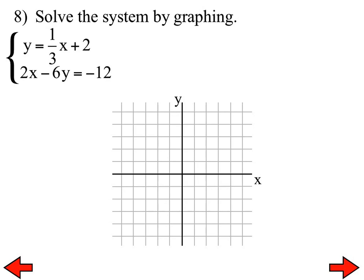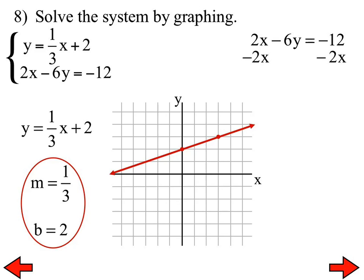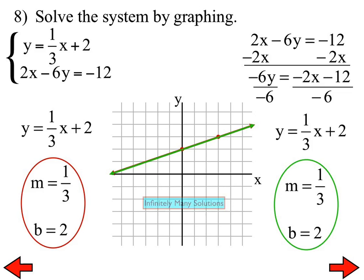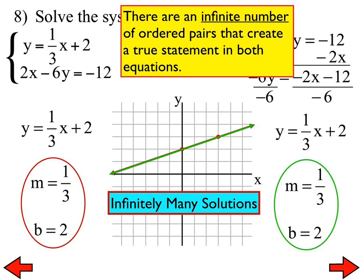Let's go to number 8: solve the system by graphing. Both equations are the same — they're equivalent equations. What happens with the graph? The lines coincide. The first equation is already in slope-intercept form, so that's easy. The second one, when you put it in slope-intercept form, you should notice right away that both are equivalent to each other — exactly the same. So you should recognize immediately that you'll end up with infinite solutions. The lines coincide; therefore there are an infinite number of solutions, meaning lots and lots of ordered pairs will make a true statement in both equations.